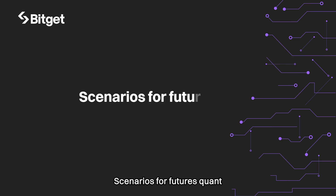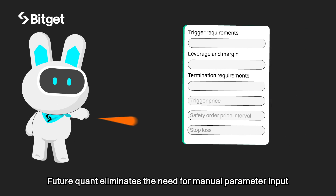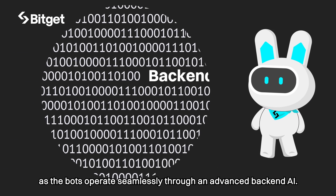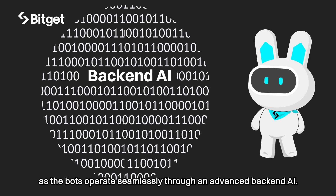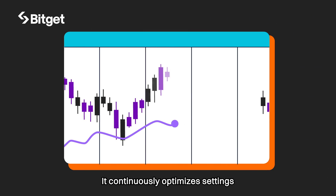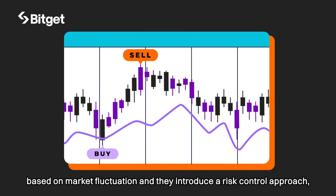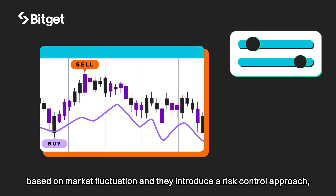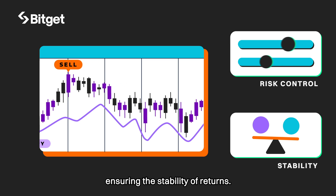Scenarios for futures quant. Future quant eliminates the need for manual parameter input, as the bots operate seamlessly through an advanced backend AI. It continuously optimizes settings based on market fluctuations and introduces a risk control approach, ensuring the stability of returns.